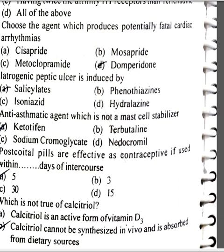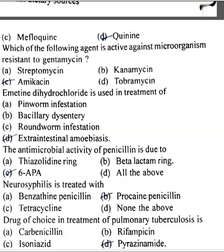Post-coital pills are effective as contraceptives if used within 5 days of intercourse. Which is not true for calcitriol? Calcitriol cannot be synthesized in vivo and is absorbed from dietary sources. Which of the following agents is active against microorganisms resistant to gentamicin? Amikacin.